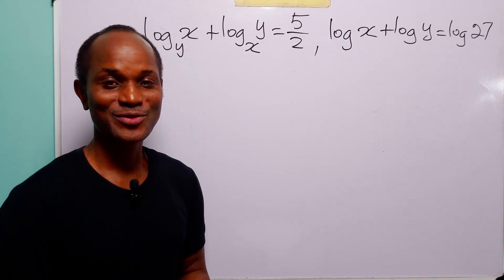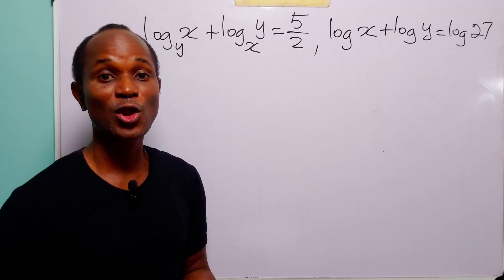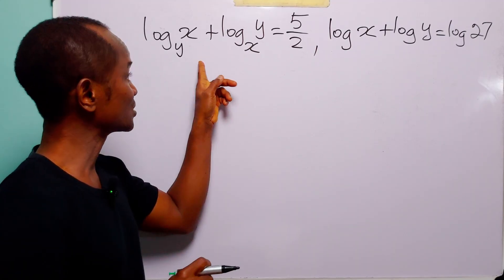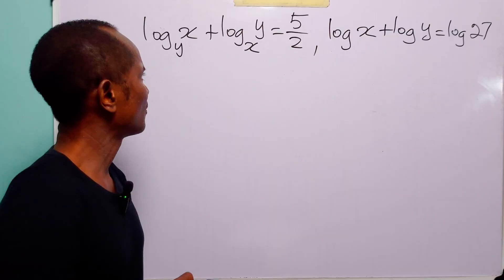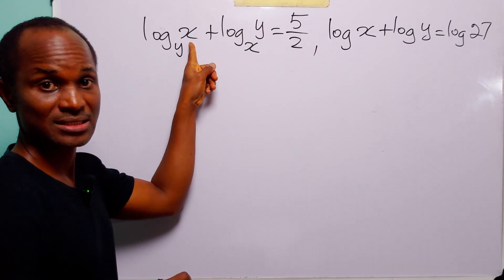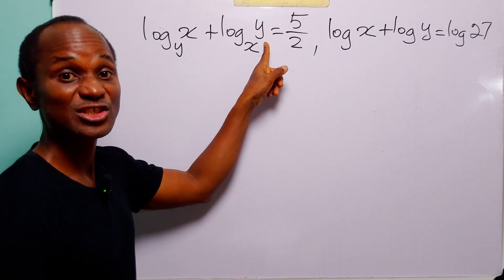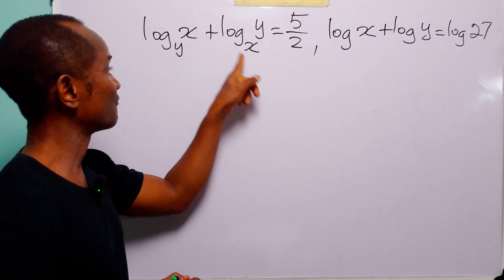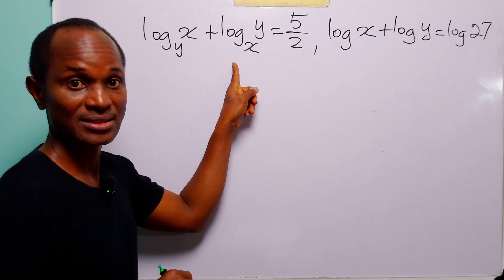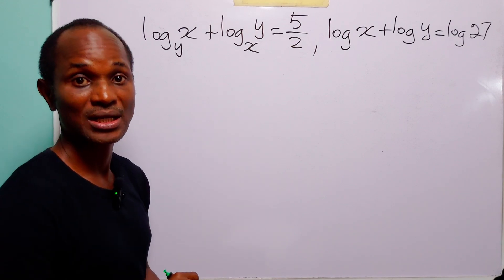Hello and welcome. In this math tutorial we have a system of logarithmic equations to solve — that is, simultaneous log equations. To solve this system we are going to begin with the first equation. When you look at this equation you'll see that we have log to base y of x and log to base x of y. You may be tempted to change bases to make the bases of these two logarithms the same, but do not do that.